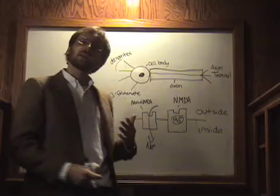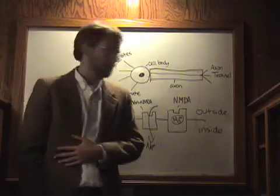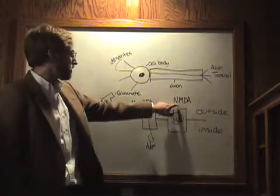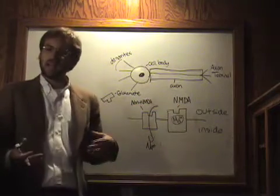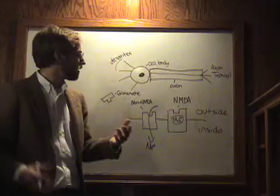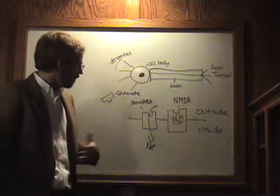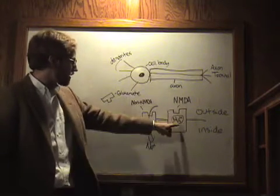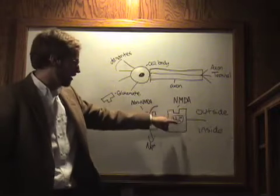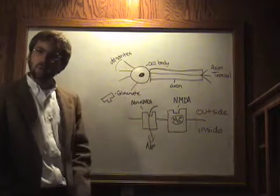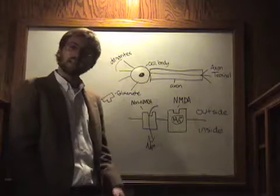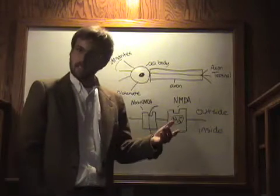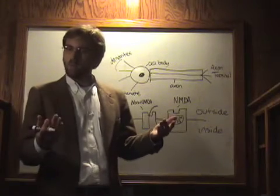But glutamate can also bind to another type of receptor. And this is called an NMDA receptor, or we'll think of it as the fancy receptor. And this receptor is special. First of all, it has a blockage by magnesium. And so what this causes it to be is that it's both receptor-gated and also voltage-gated at once.